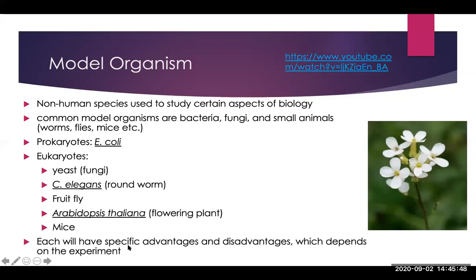There are different advantages and disadvantages to each model organism, but overall model organisms should be relatively easy to work with. They should reproduce relatively quickly, you should be able to have a large enough population to get good data and good statistics, and they should pose little to no harm — you should be very humane in the way you treat your model organisms. You want to choose a model organism that gives you the best similarity to humans for whatever specific thing you're testing.